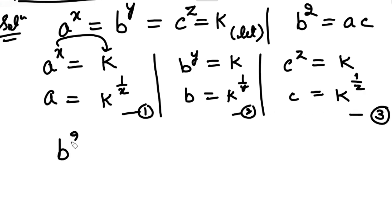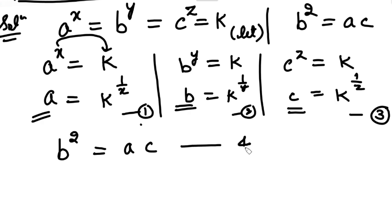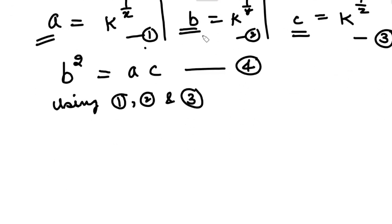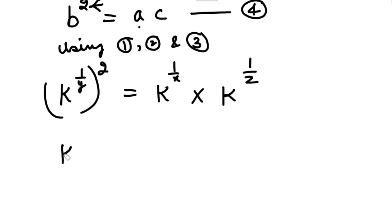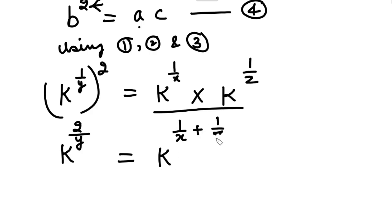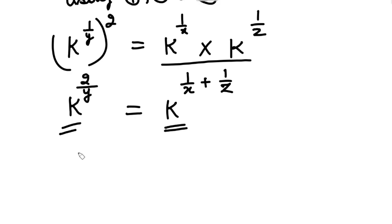Now, the relation given in the question is B squared equals AC. Substituting the values of A, B, C using equations 1, 2, and 3: in place of B we put K raised to the power 1 upon Y with power 2 as it is; in place of A we put K raised to the power 1 upon X; and in place of C we put K raised to the power 1 upon Z. On the left-hand side, using the third law of indices, the powers multiply to give K raised to the power 2 upon Y. On the right-hand side, the first law of indices applies — since bases are the same, powers add in multiplication — giving K raised to the power (1/X + 1/Z). Since the bases are equal, the indices are equal: 2 upon Y equals 1 upon X plus 1 upon Z.